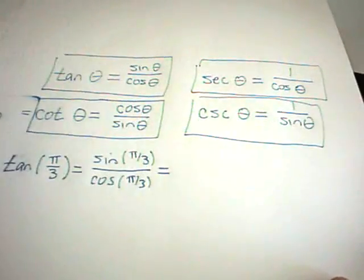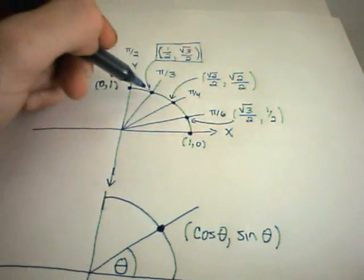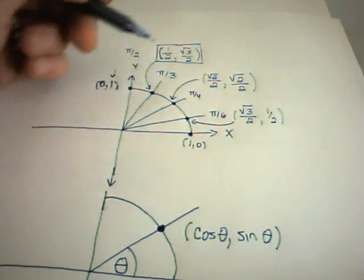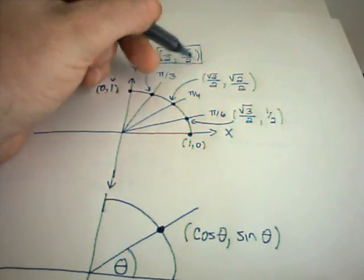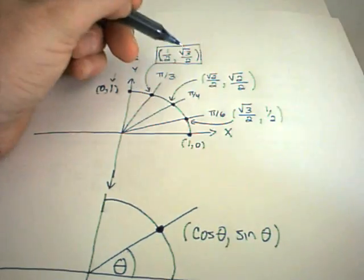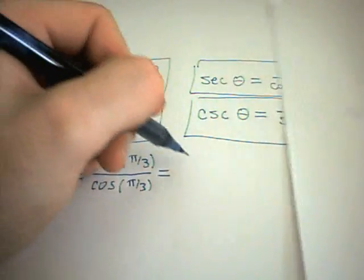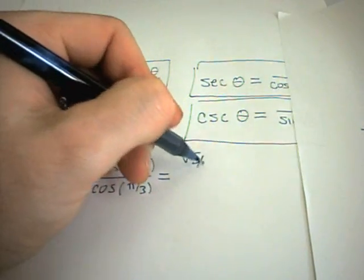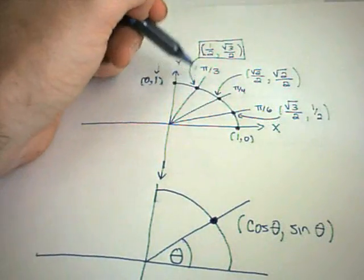But we just saw in our other video, remember we find the angle pi over 3. Sine of pi over 3 is defined to be the y-coordinate at that point. So sine of pi over 3 is going to be square root of 3 over 2. Likewise, cosine of pi over 3 is the x-coordinate. So we simply get 1 half.